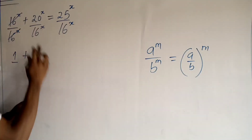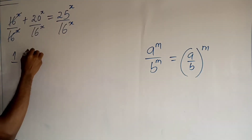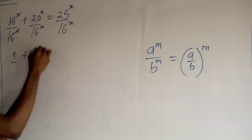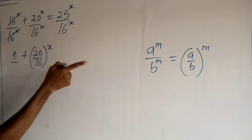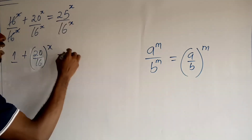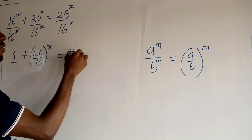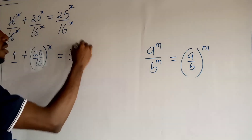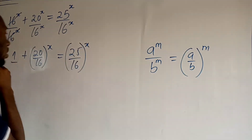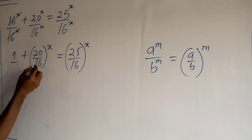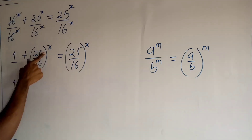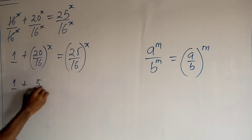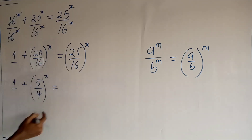That is what is going to happen right here. So I'll have 20 upon 16, all to the power x, equal to 25 upon 16, all to the power x. And of course, 4 can divide here: 4 divides 20 gives 5, and 4 divides 16 gives 4. So we have 1 plus 5/4 all to the power x.